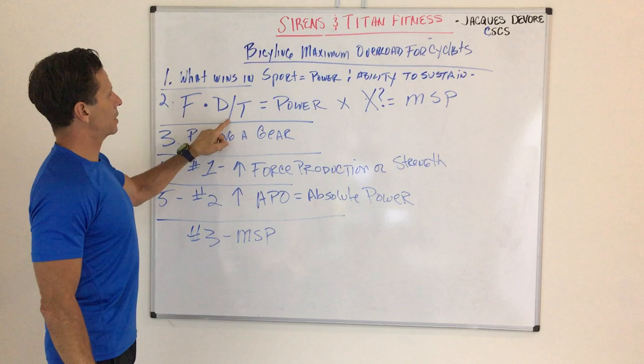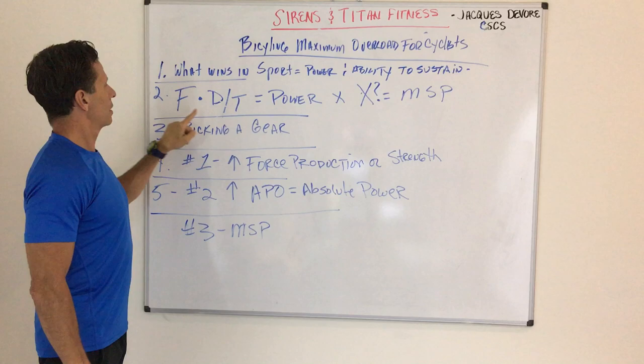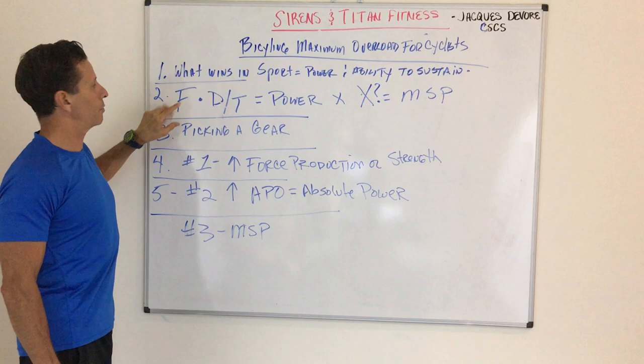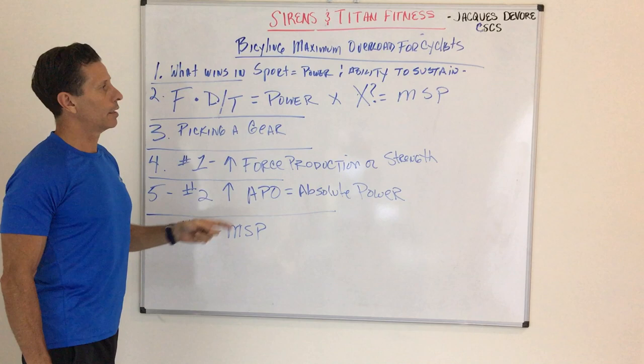Now what goes into that? This is the physics: force times distance divided by time equals power. Distance divided by time is velocity. Force is strength, your ability to generate a force. So in the assessment portion of the book, we're trying to figure out where in that scheme of things you produce power and how do you do it well.